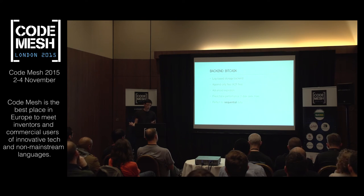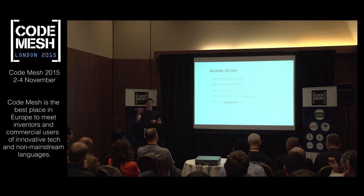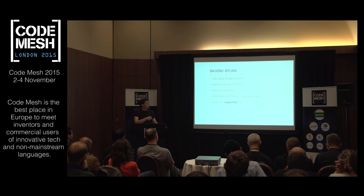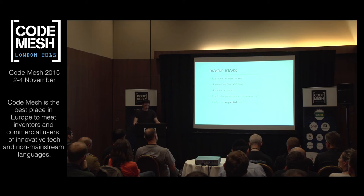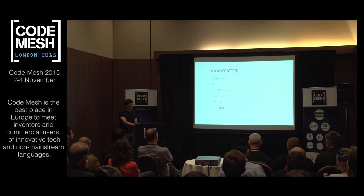Fetching data from Bitcask means finding the key in memory and then fetching the data from disk. Bitcask uses the file system cache, so data is probably already in memory, and if not you're guaranteed to reach your data with at most one disk seek — which is not the case with LevelDB. This backend is perfect for sequential data, which is why we used it for our event storage.